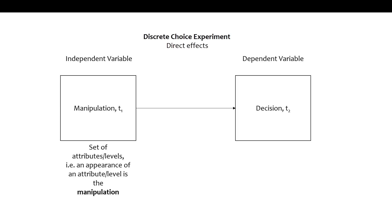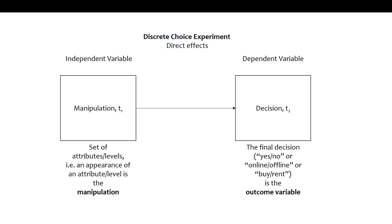We then observe the dependent variable — the decision. My manipulation is a set of attributes and levels that I show to you. You see a combination of different attributes and respective levels, and based on these you decide whether you want this option or not — for example, whether to buy or to rent. The manipulation is what I show you, and your decision is the dependent variable.